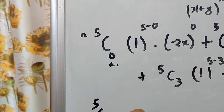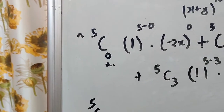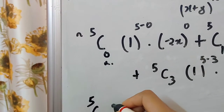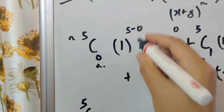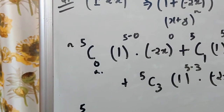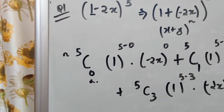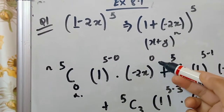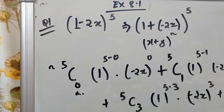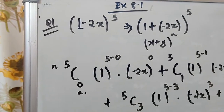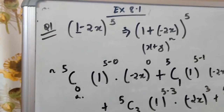Now let's calculate. We know 5C0 times 1 to the power 5 gives 1, and minus 2x to the power 0 also gives 1, since anything to the power 0 is always equal to 1.